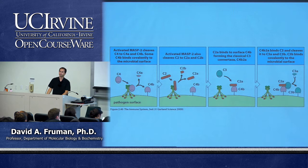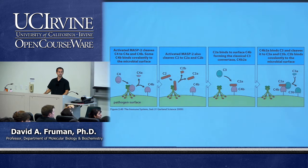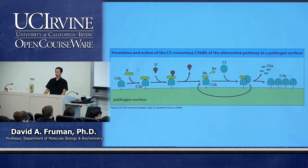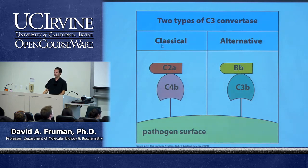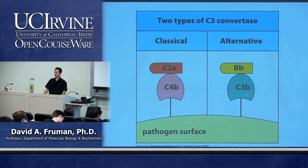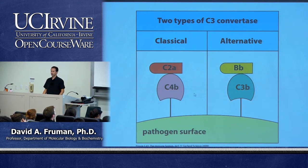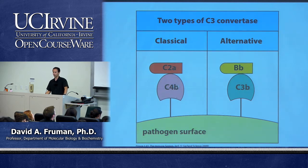Q&A: Once C3b from the MBL pathway is attached to the pathogen surface, it goes through the alternative cycle — recruiting factor B, cleaved by factor D to generate the alternative convertase. The alternative C3 convertase is C3b-Bb and the classical C3 convertase is C4b-C2a. You do need to know the names of both convertases.